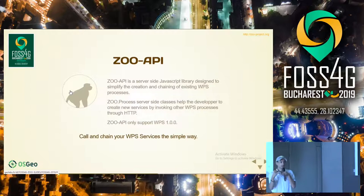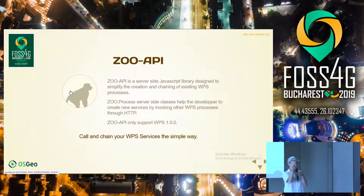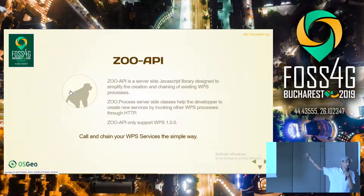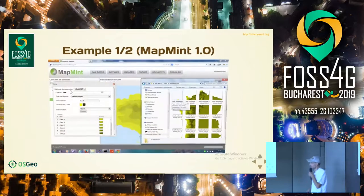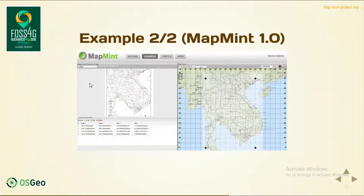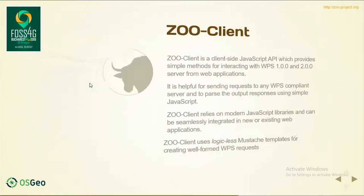You can chain all these together, but not only in the way WPS 1.0 allows — embedding an execute request as input for another execute request. Here you can also add logic between every processing step. Here are some examples from MapMint version 1, where we used this JavaScript API. Here is another example, the georeferencer, which was made available online ten years ago.